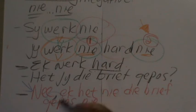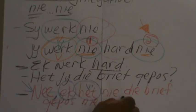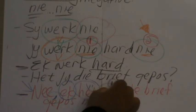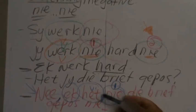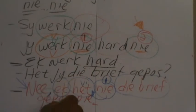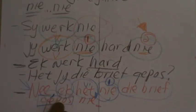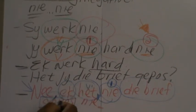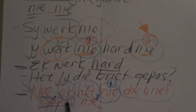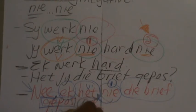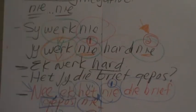Here we get to the second part of the sentence. There is our subject, there is our verb one. There is our first nie in the position directly after the first verb. Then the rest of the sentence — 'ek het nie' — then our object, 'die brief', and then 'gepos' is our verb two. When we have 'het' in the sentence, our verb gets 'ge' in front of it and goes to the end of the sentence. Then our verb two still goes to the end of the sentence, but our second nie goes directly after verb two.